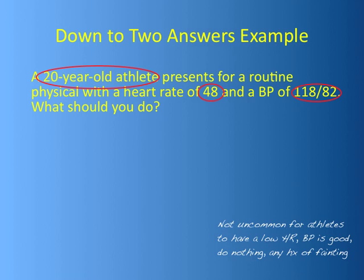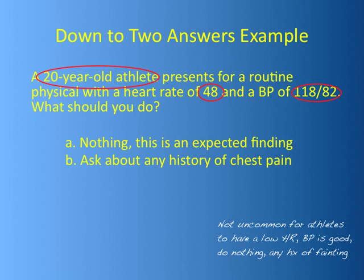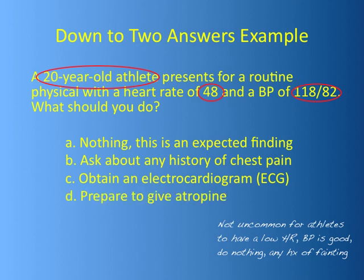Now here are the options: nothing — this is an expected finding; ask about history of chest pain — you don't have that written down, so mark it off; obtain an EKG — not written down, mark it off; prepare to give atropine — not written down, mark it off. That clearly leads you to: nothing, this is an expected finding. If asking about history of fainting was also an option, then apply the rule: which of those two is worse or more dangerous?